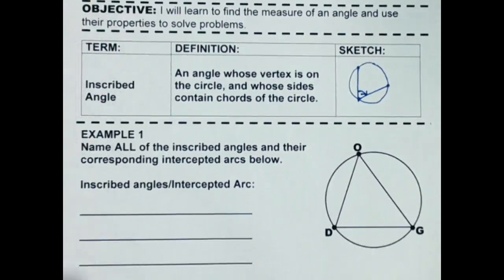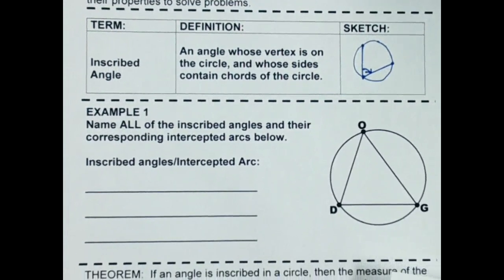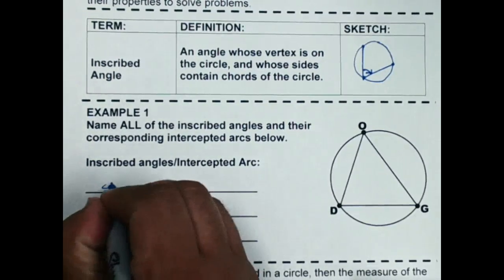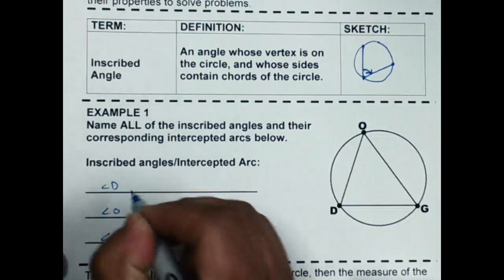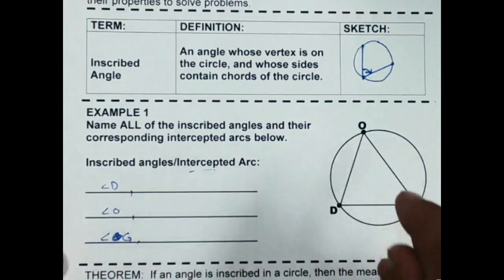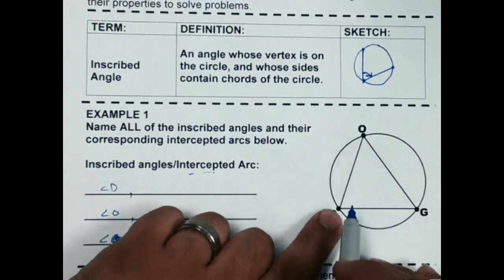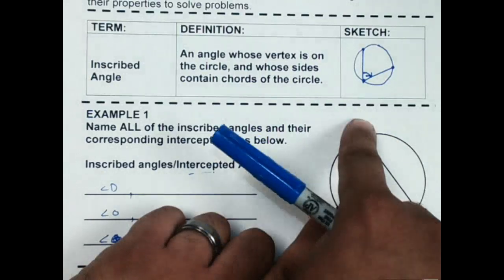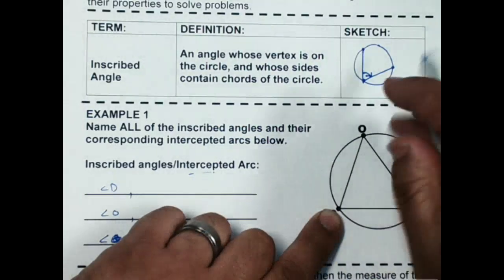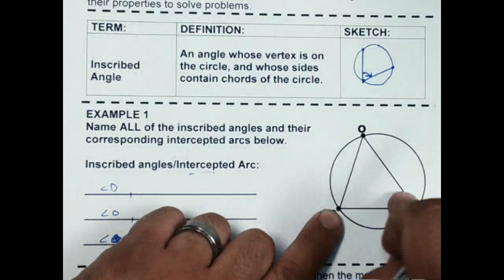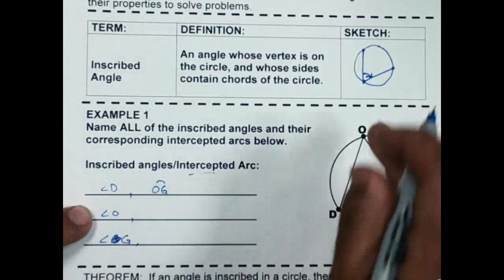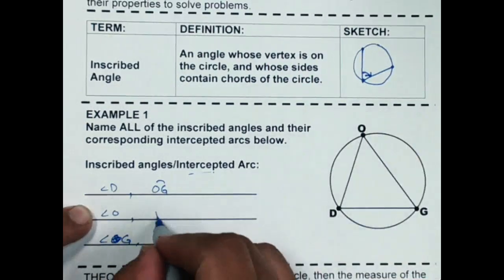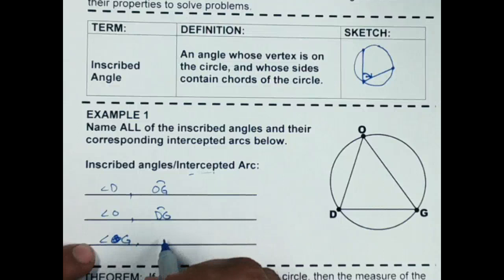Let's look at this triangle inscribed inside the circle, which creates three angles: angle D, angle O, and angle G. We also need to talk about what's called an intercepted arc. For angle D, the angle goes out to O and to G, so the arc connecting those two points — arc OG — is the intercepted arc. For angle O, the intercepted arc is DG. For angle G, the intercepted arc is DO.